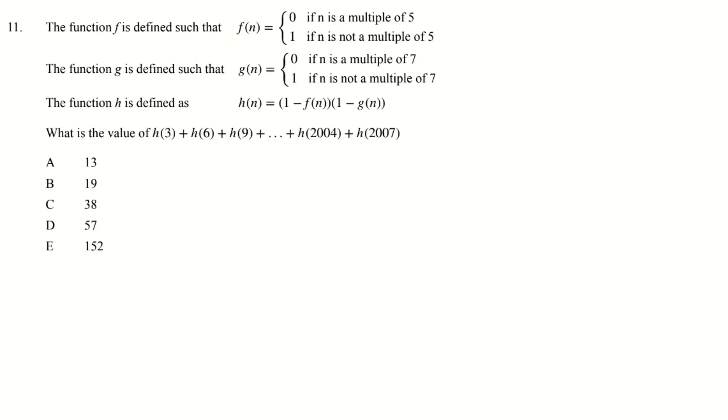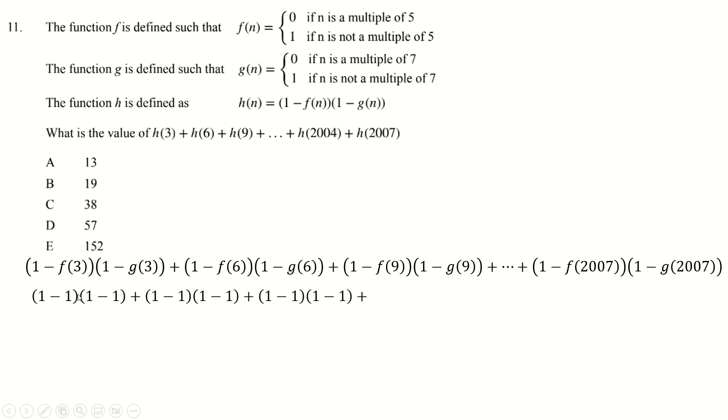Question 11 then. So we have these two piecewise functions that are zero if they're on their multiples, five and seven respectively, and one otherwise. And then H of N is this combination. So let's just write out the first few terms here. H of three is one minus F of three into one minus G of three, and so on. We're only going to be using multiples of three here. Now, the thing is, though, F of three is just one, right? Because three is not a multiple of five. So that's just one minus one times, and then that's not a multiple of seven either. So it's one minus one. But of course, that's just zero times zero, which is zero. In fact, all of these are zeros.